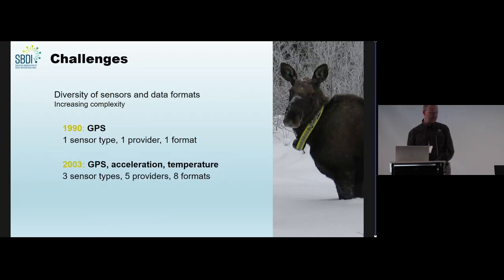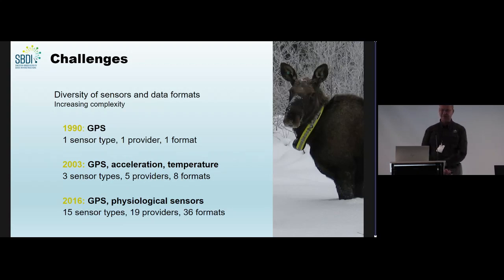13 years later, we had temperature, acceleration and GPS, three sensors on the collar. Now we had more competition. We have five different providers selling us collars and delivering data in eight different formats. And now with physiological sensors, we have 15 different sensor types, 19 different providers and 36 different formats.